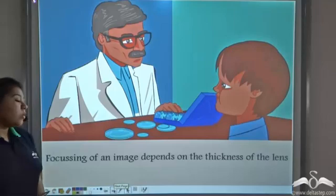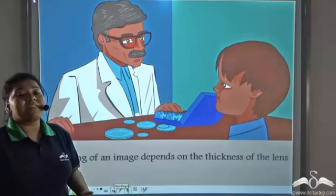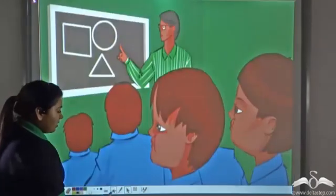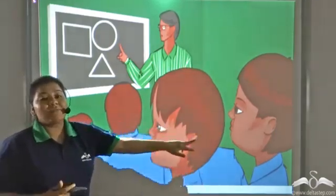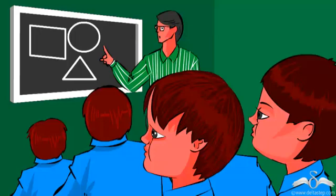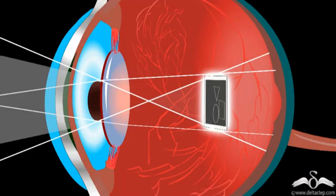The doctor told him that focusing of an image depends on the thickness of a lens. So let us see the difference between the thickness of the lens of Peter and Paul. Notice that Peter had a problem seeing far objects like the blackboard. Things written on the blackboard seemed unclear and hazy to him. Now see, his lens is very curved and his eyeball is lengthened.